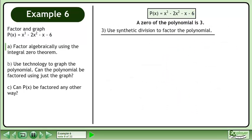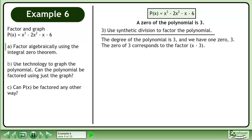Now use synthetic division to factor the polynomial. The degree of the polynomial is 3, and we have one zero, 3. The zero of 3 corresponds to the factor (x - 3). Divide x³ - 2x² - x - 6 by (x - 3) to find the remaining factors.